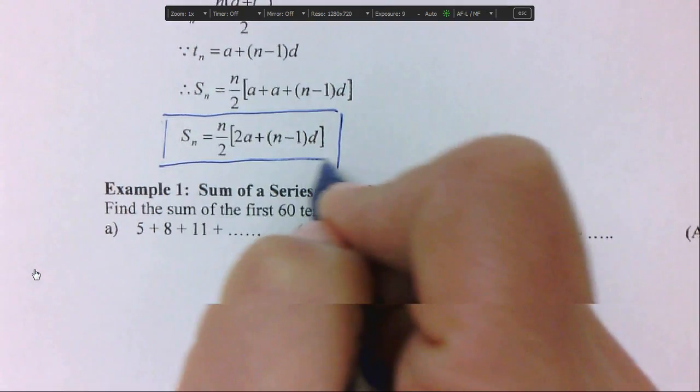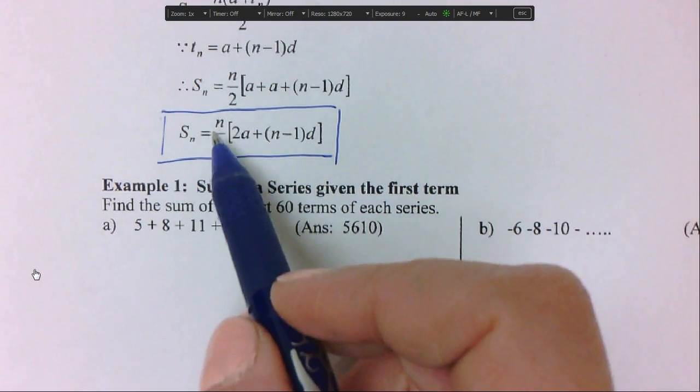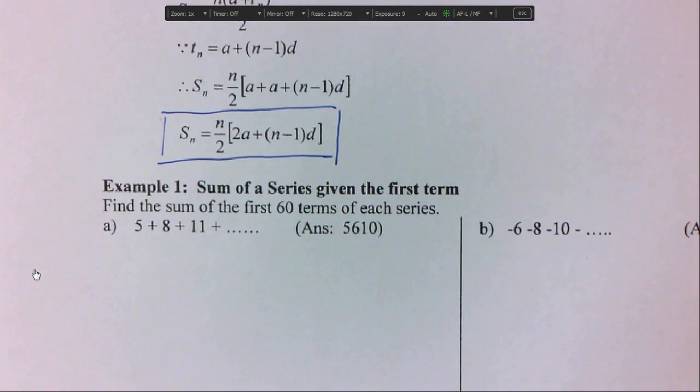So this is your third formula. Sn is the sum. N is the number of terms we're going to add up. A is the first term. D is the common difference.